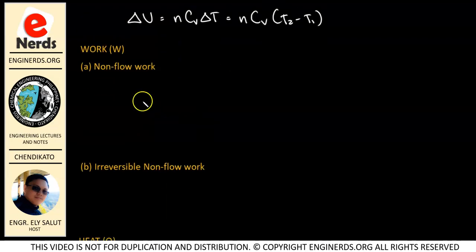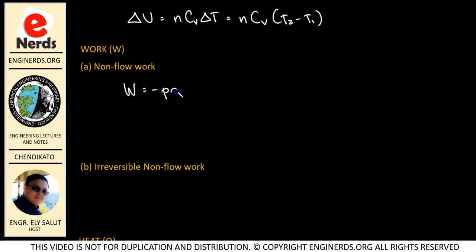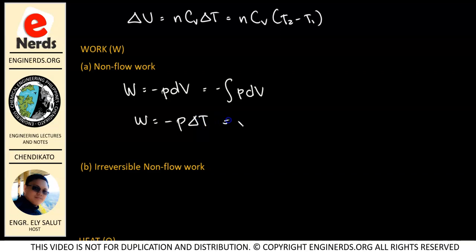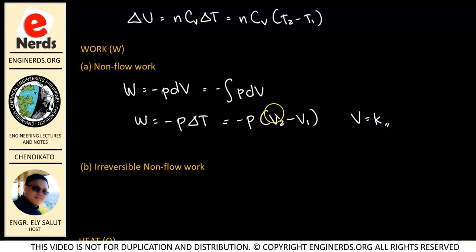Now let us talk about work. There are two types of work to take note of on this topic. For a non-flow work, work is equal to negative P·dV. Taking the integral, we get W equal to negative P·delta V, or negative P·(V2 minus V1). But since we have a constant volume process where volume is constant, V2 equals V1, and therefore this equals zero — so our work is equal to zero.